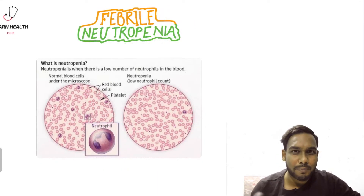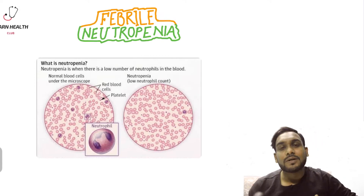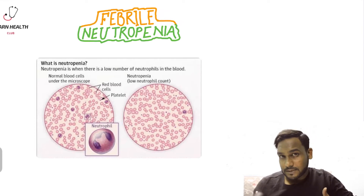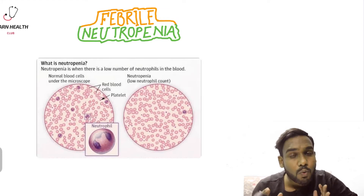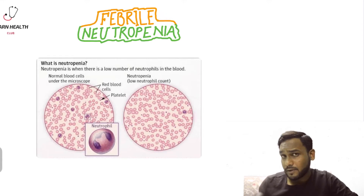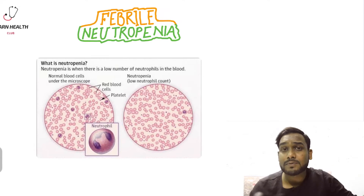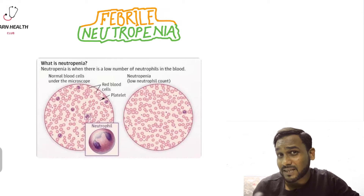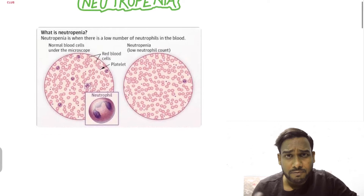Fever is a common problem in children presenting in the emergency department and it may be one of the first indications of a life-threatening infection. The function of neutrophils is to fight against invading pathogens. Neutropenia means a decreasing number of these neutrophils. When a child has neutropenia, the child's ability to fight against pathogens is decreased, and various organisms may invade the child producing an infection. As a result, there may be fever — then we say the child is suffering from febrile neutropenia.